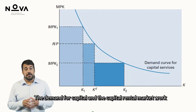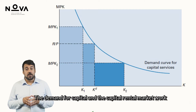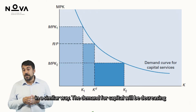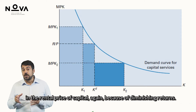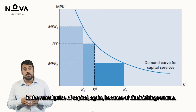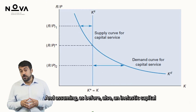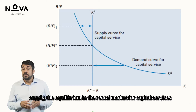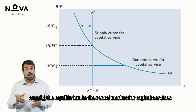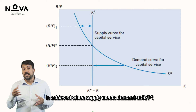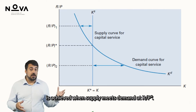The demand for capital and the capital rental market work in a similar way. The demand for capital is decreasing in the rental price of capital, again because of diminishing returns. Assuming an inelastic capital supply, the equilibrium in the rental market for capital services is achieved when supply meets demand at R/P*.